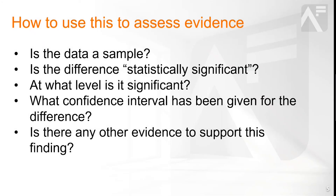You can use this when assessing evidence. If you read a report that claims they found a difference between two groups, the first thing to think about is whether the data they used is a sample. If it is a sample, the analyst should report if the difference is statistically significant. If it is statistically significant, then check what level of significance was chosen. Is there a confidence interval given for the range of the true difference? What percentage of confidence is the interval given? Finally, it's always good to cross-reference any finding like this with other analytical reports to see if other analysts or researchers have found the same thing.